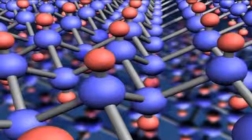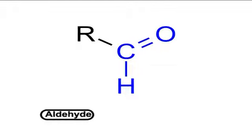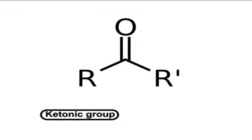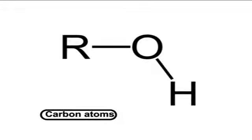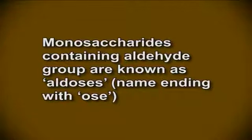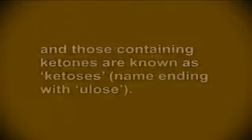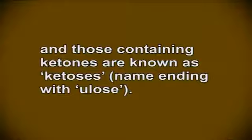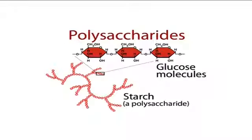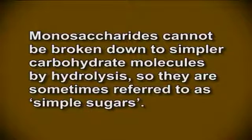The first type is monosaccharides. Monosaccharides are carbohydrates containing short chains of carbon atoms with one aldehyde or ketonic group, also known as a carbonyl group, with each remaining carbon atom bearing a hydroxyl group. Monosaccharides containing an aldehyde group are known as aldoses (name ending in -ose), and those containing ketones are known as ketoses (name ending in -ulose). They cannot be broken down to simpler carbohydrate molecules by hydrolysis, so they are sometimes referred to as simple sugars.